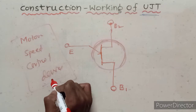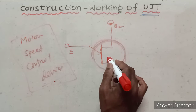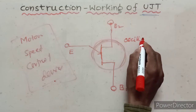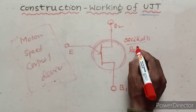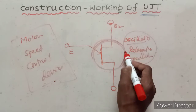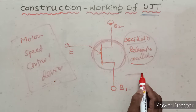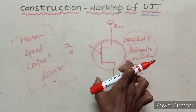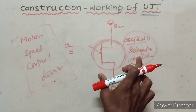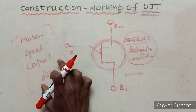UJT is used as an oscillator and also as a relaxation oscillator. A relaxation oscillator simply changes frequency easily. Because of this, UJT is used as a motor speed control device.